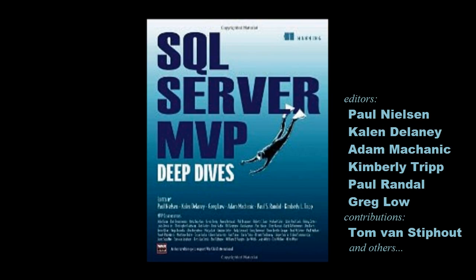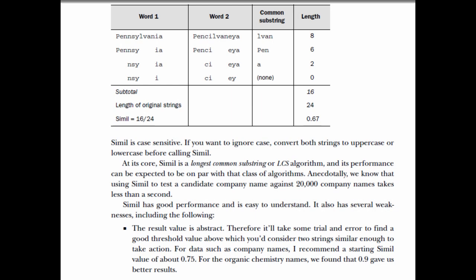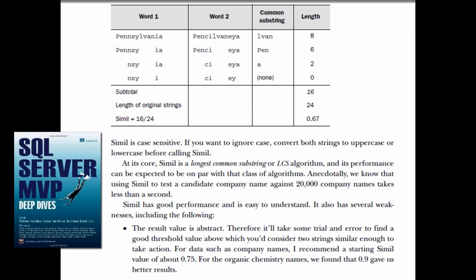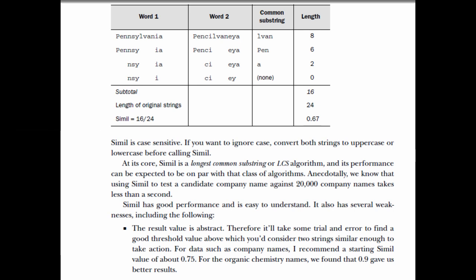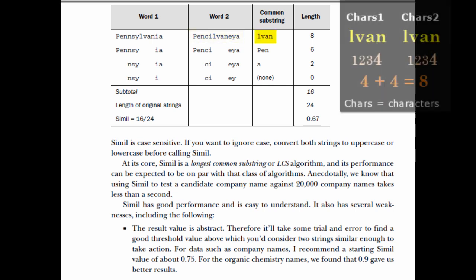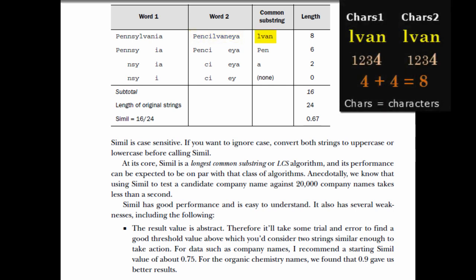If you want all the details about Simul, then I would recommend buying that book. Here we're looking at a page from the book which explains how the Simul algorithm works. It's a longest common substring algorithm. It looks at two words — in this case Pennsylvania spelled two different ways — and finds the largest substring they have in common. That's L-V-A-N, and the length of that in word 1 plus word 2 is 8.